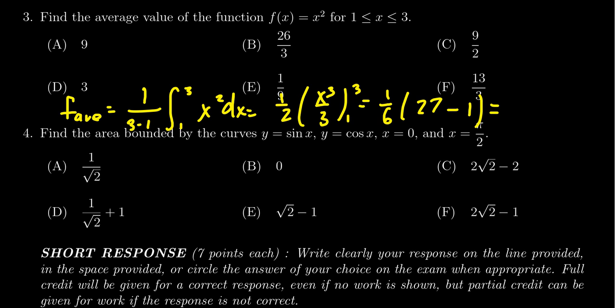27 minus one is 26 over 6. 26 and 6 are both even numbers, so we can simplify that to be 13 over 3. And then we see that the correct answer is in fact F.